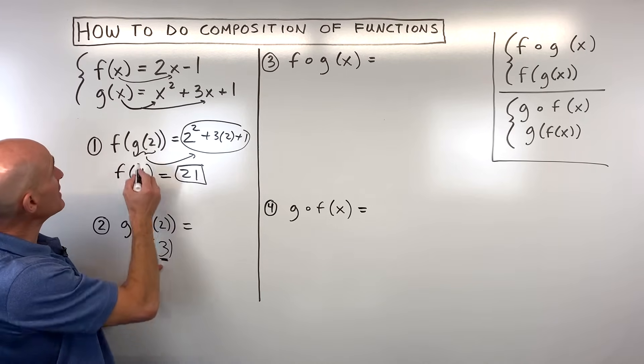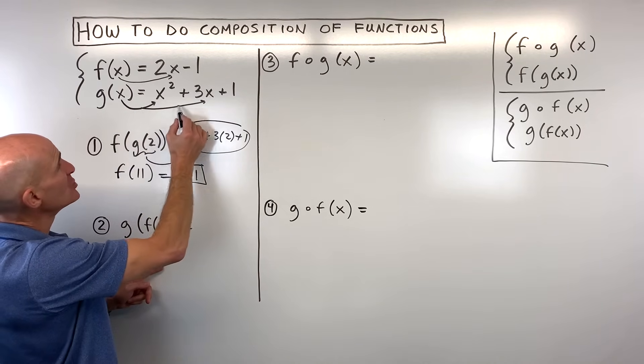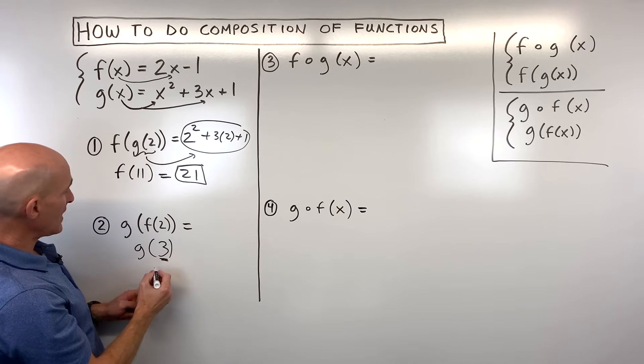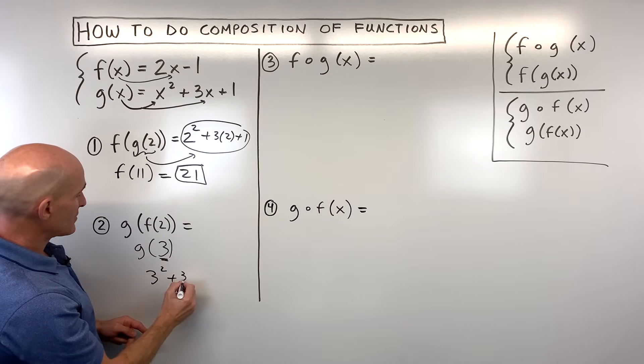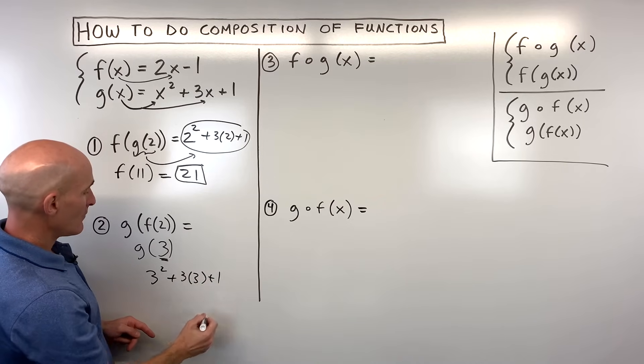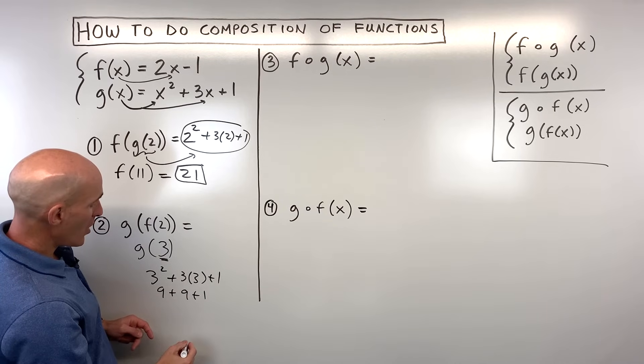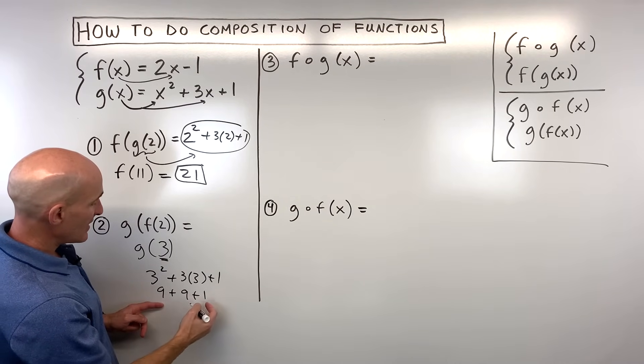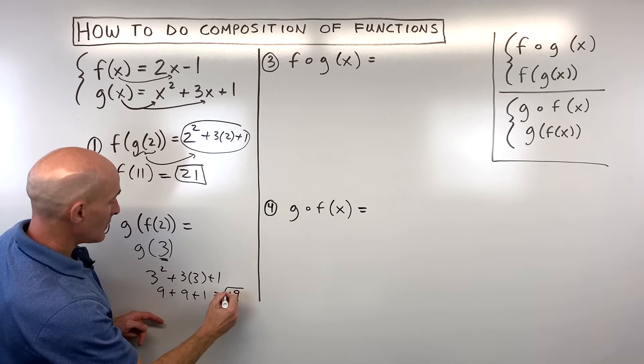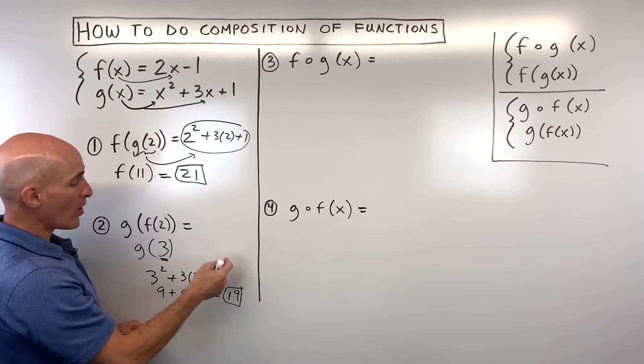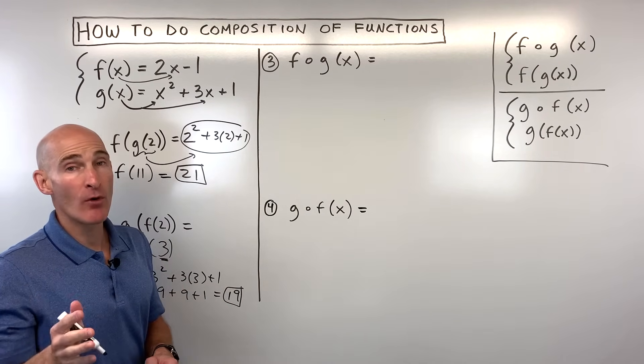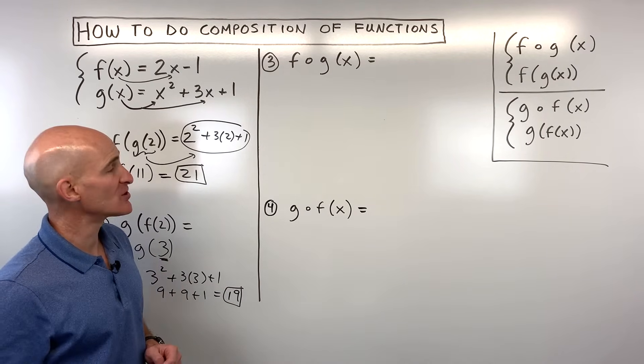Now if we take 3 and we put that into our g function in place of x, what do we get? We get 3 squared plus 3 times 3 plus 1. So that's 9 plus 9 plus 1 which is 19. And notice here we got 21, here we got 19. So the order is very important when you do composition of functions.